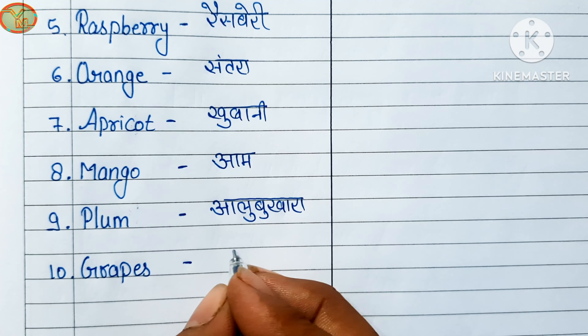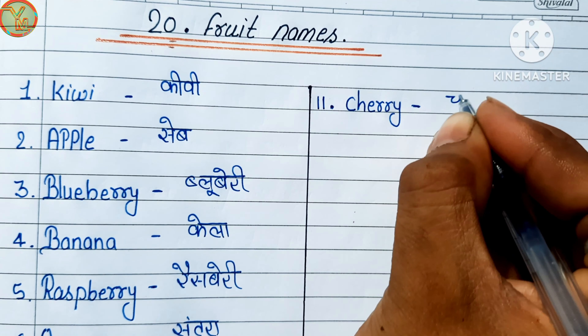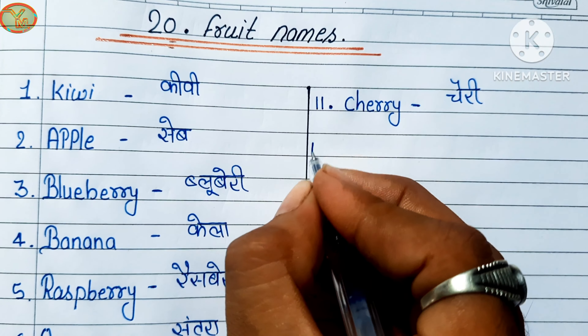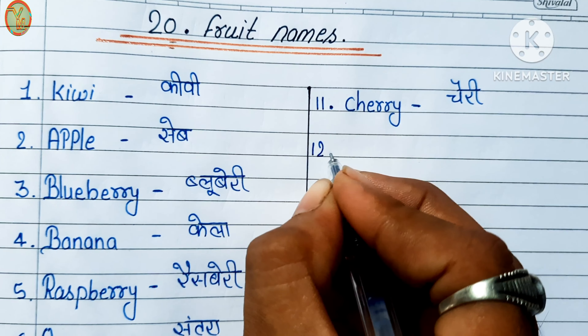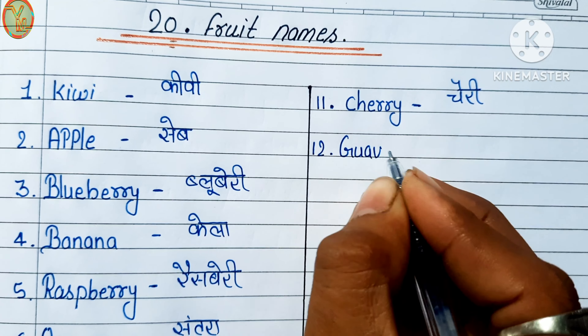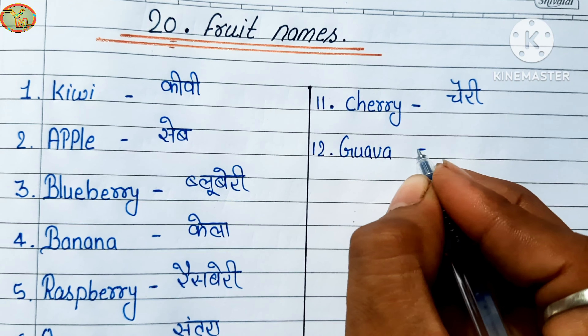Eleventh number: cherry. Cherry means cherry. Twelfth number: guava. Guava means amrood.